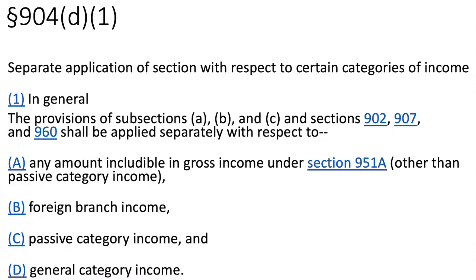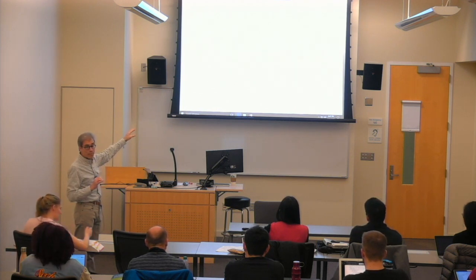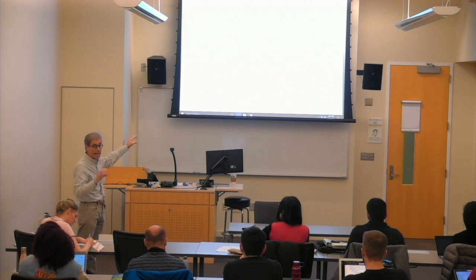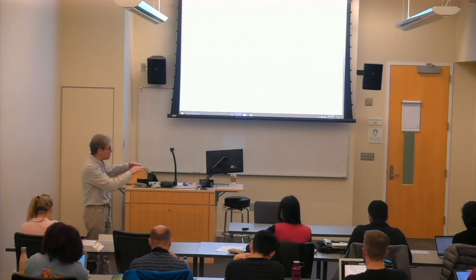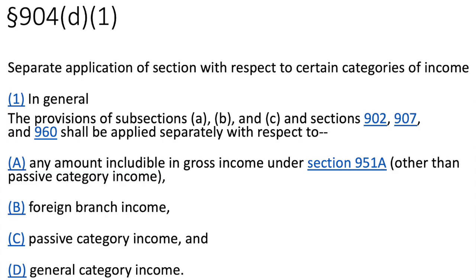Today we have four categories — A, B, C, and D. Category A refers to Section 951A, a separate basket for taxes paid on GILTI — global intangible low-taxed income, Section 951(a). There's a separate one for foreign branch income, then passive category income. Originally it was focused on interest income, but it broadened to all passive income. And lastly, everything else, which is general category.